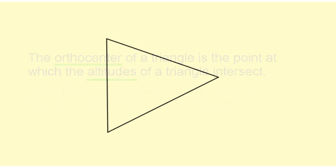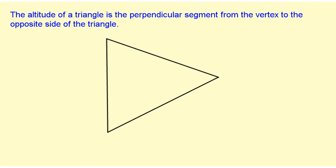To construct the altitude, we need to remember that the altitude of a triangle is the perpendicular segment from the vertex to the opposite side of that triangle.